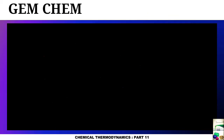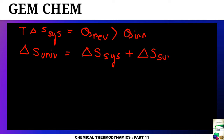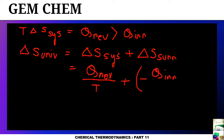This can be written as: T times delta S system equals q reversible, which is greater than q irreversible. Delta S universe can now be written as delta S system plus delta S surrounding, where delta S surrounding is zero. This total comes to q reversible by T for the reversible part, plus the irreversible part, which is negative in sign: minus q irreversible by T.